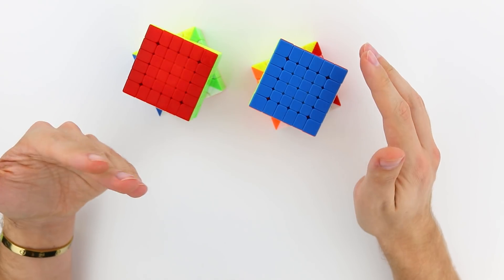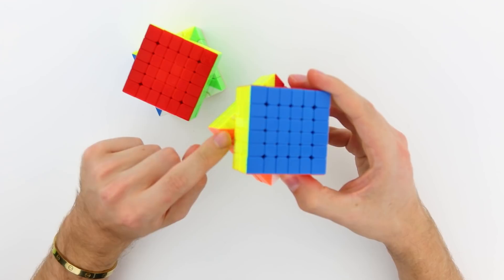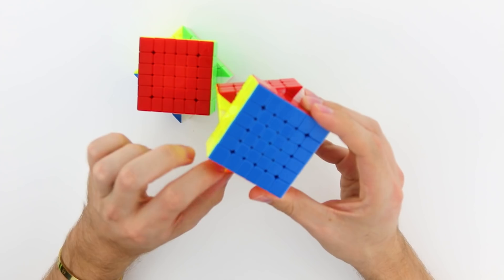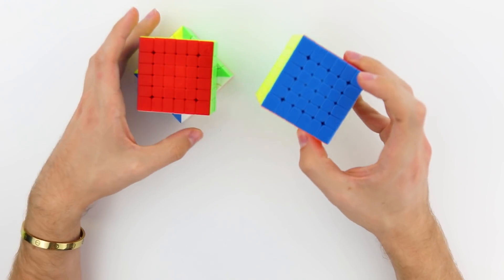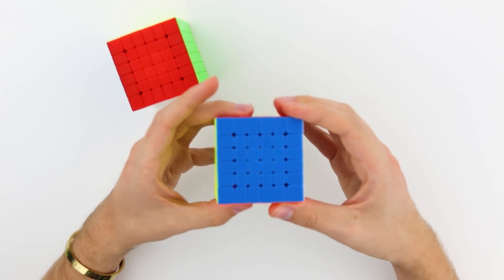The big thing I did notice that helps contribute towards a new feel are going to be these lines on the innermost layers. So we have this ridged groove, which I think helps the lubricant disbursement, which we do not have on the version 1.